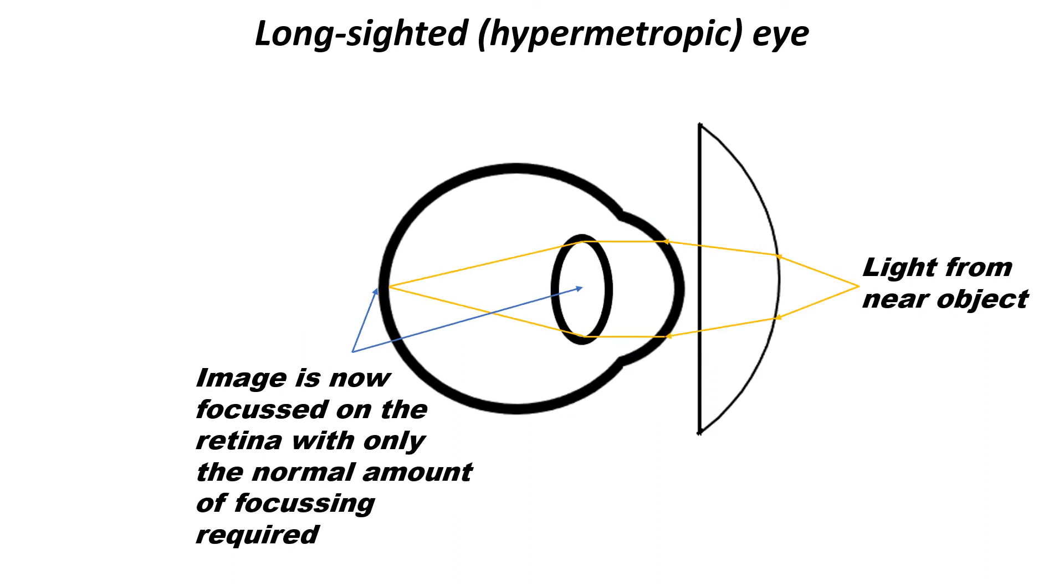When the person looks at a near object, because the light rays are converged by the convex lens, the eye only has to apply a normal or expected amount of focusing effort to see clearly.